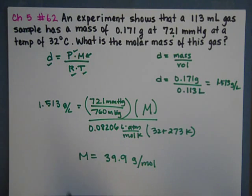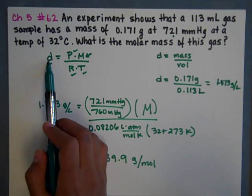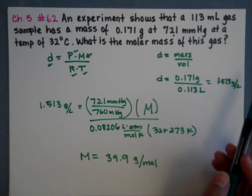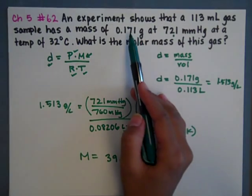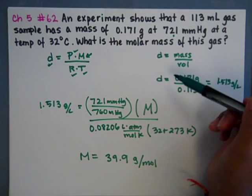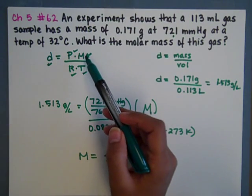So again, sometimes you'll be given a density which you can plug in straight to the equation. If you're not given a density, you'll be given a mass and a volume. You can find your own density. And remember, this is molar mass, not molarity.